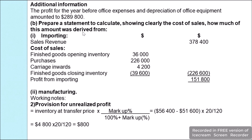For the profit from importing, we start with sales revenue of imported goods of $378,400. We subtract cost of sales: opening finished goods inventory of $36,000, plus purchases of $226,000, plus carriage inwards of $4,200, less closing inventory of $39,600, giving cost of sales of $226,600. Subtracting from revenue gives profit from importing of $151,800.